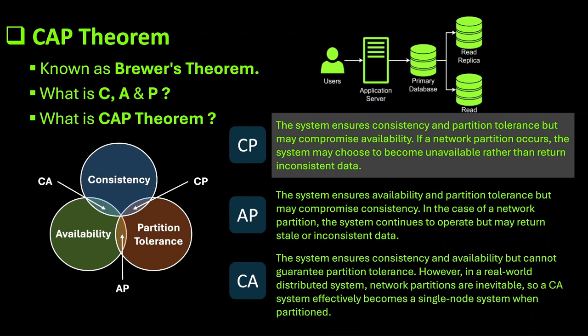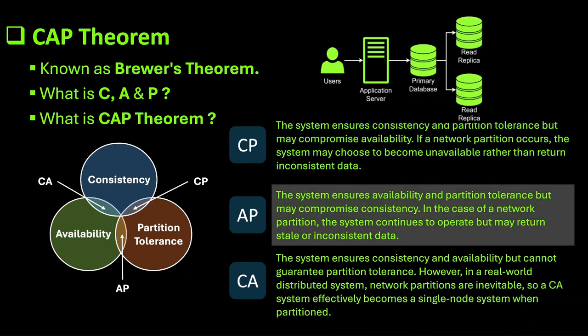Next is AP. In this case the system ensures availability and partition tolerance but may compromise consistency. In the case of a network partition, the system continues to operate but may return stale or inconsistent data.